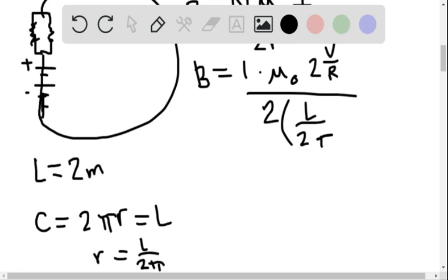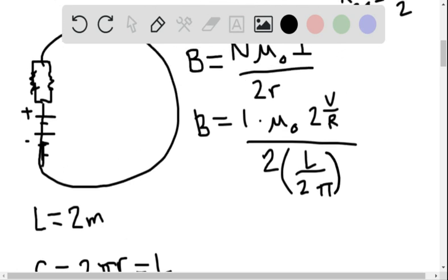So we could put in here L over 2 pi. All right, these 2's cancel out. The other ones would have also. B is 2 pi mu zero V over RL.